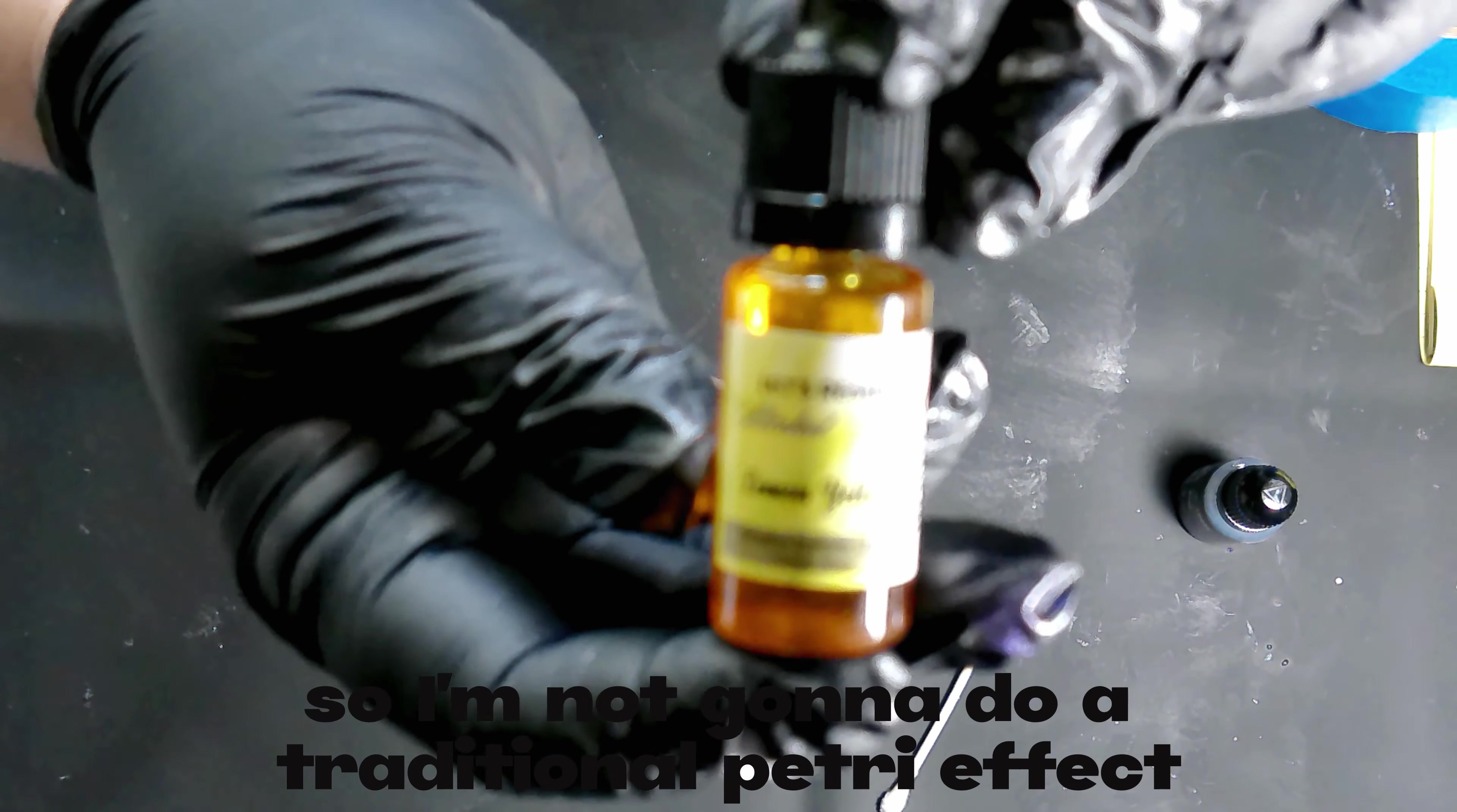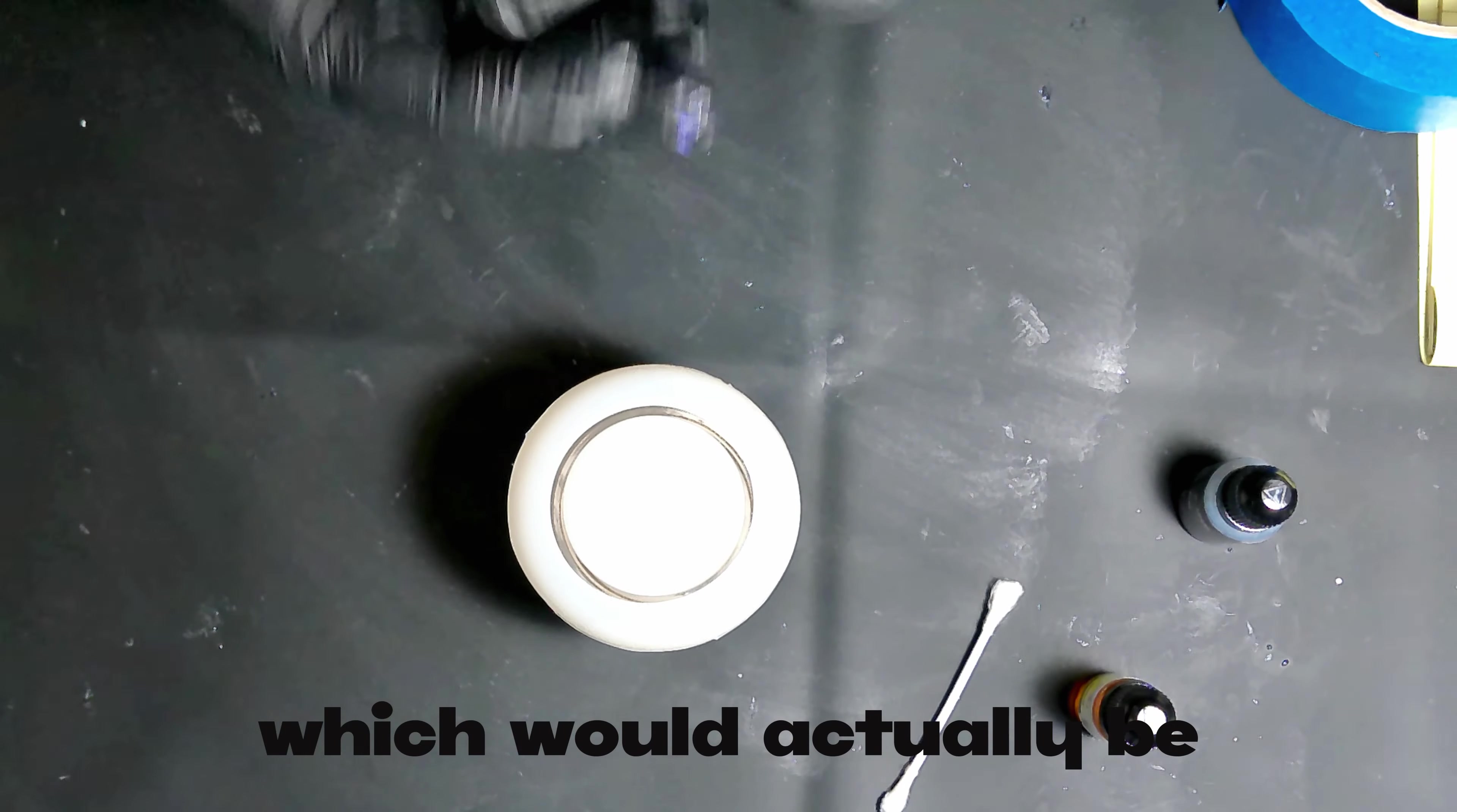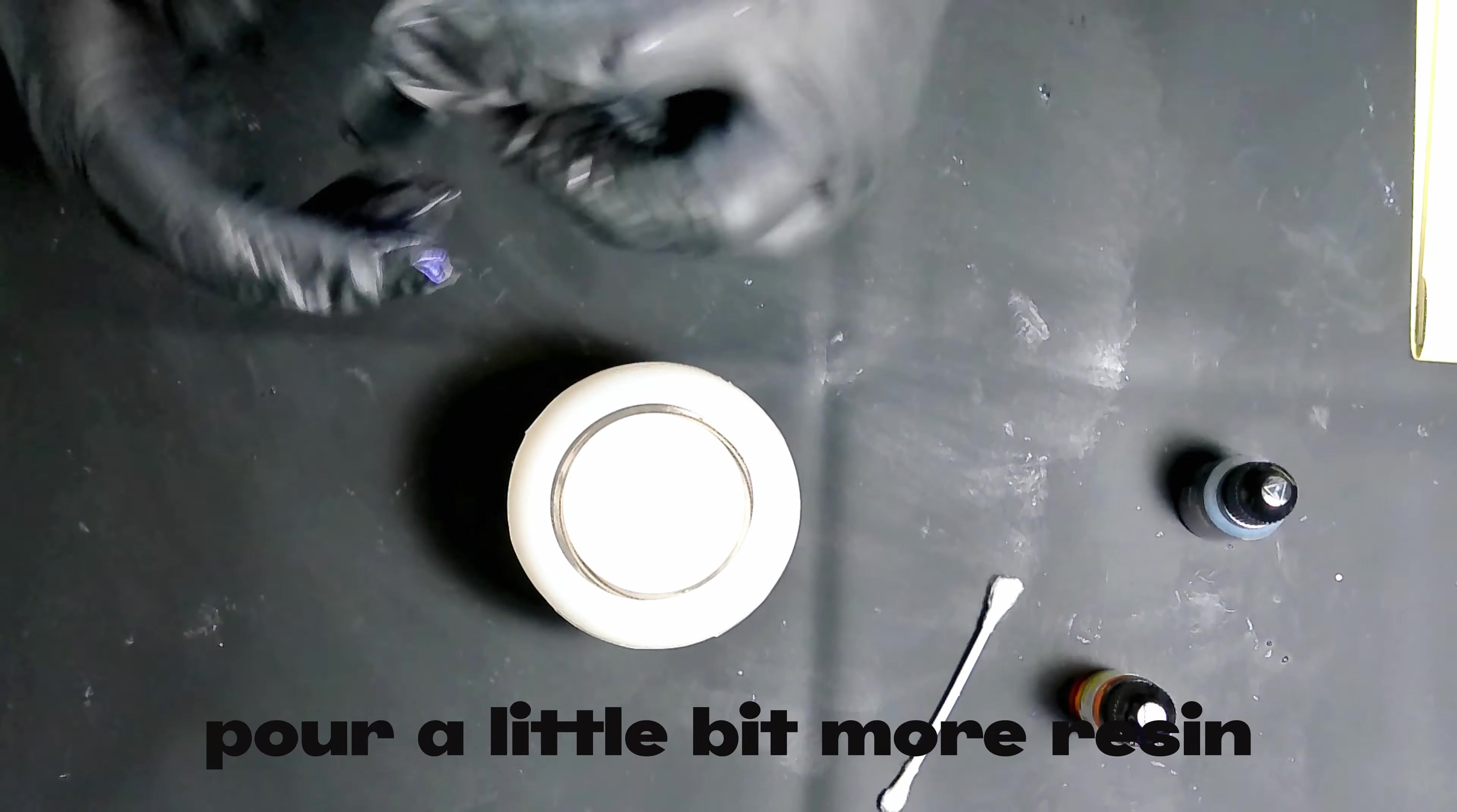So I'm not going to do a traditional petri effect with the alcohol ink. What I want to do is I'm going to put a little bit of resin on the top part, which would actually be the bottom of the inside of the jar, put some alcohol inks, all three of my colors, pour a little bit more resin, put some alcohol inks, and just continue doing that until it's completely full.